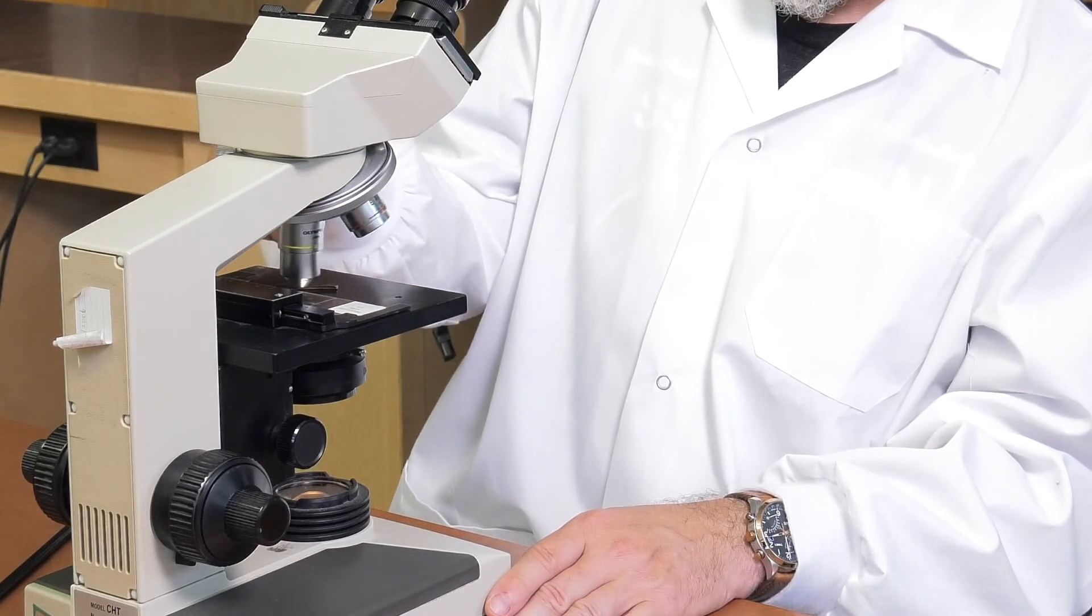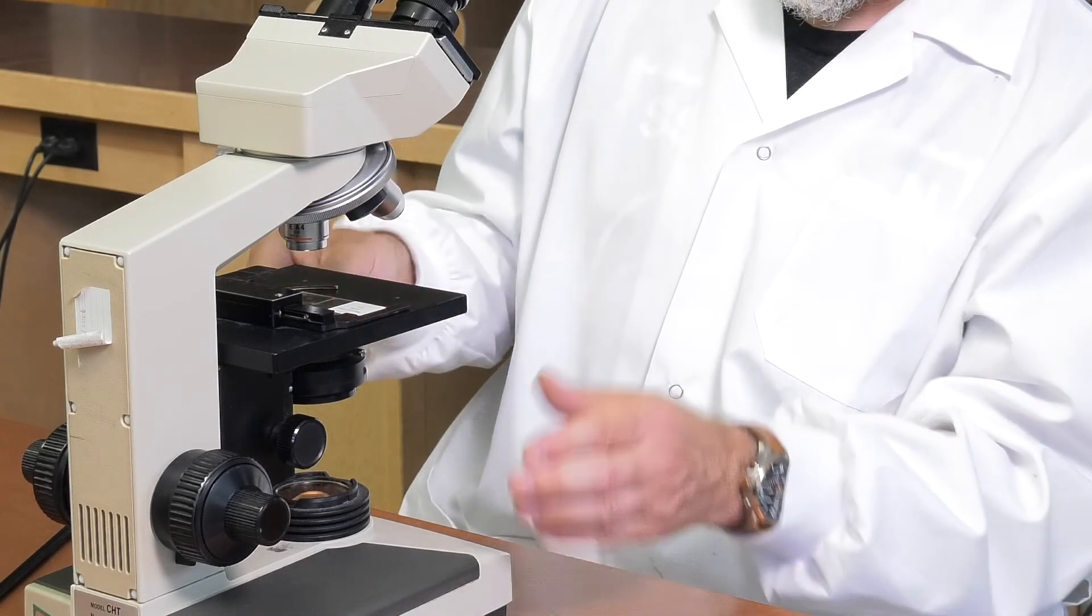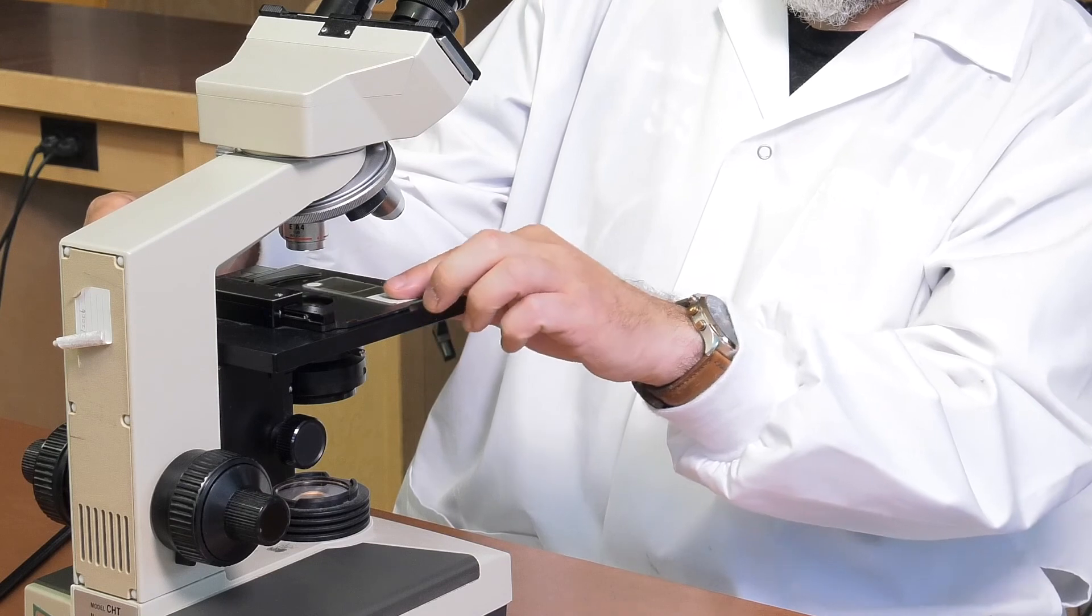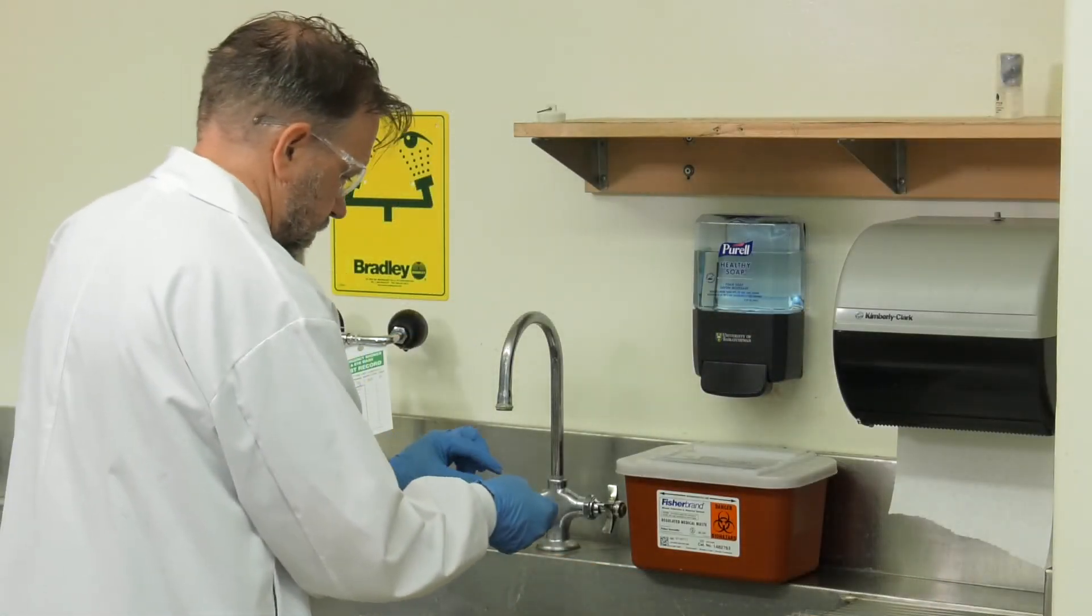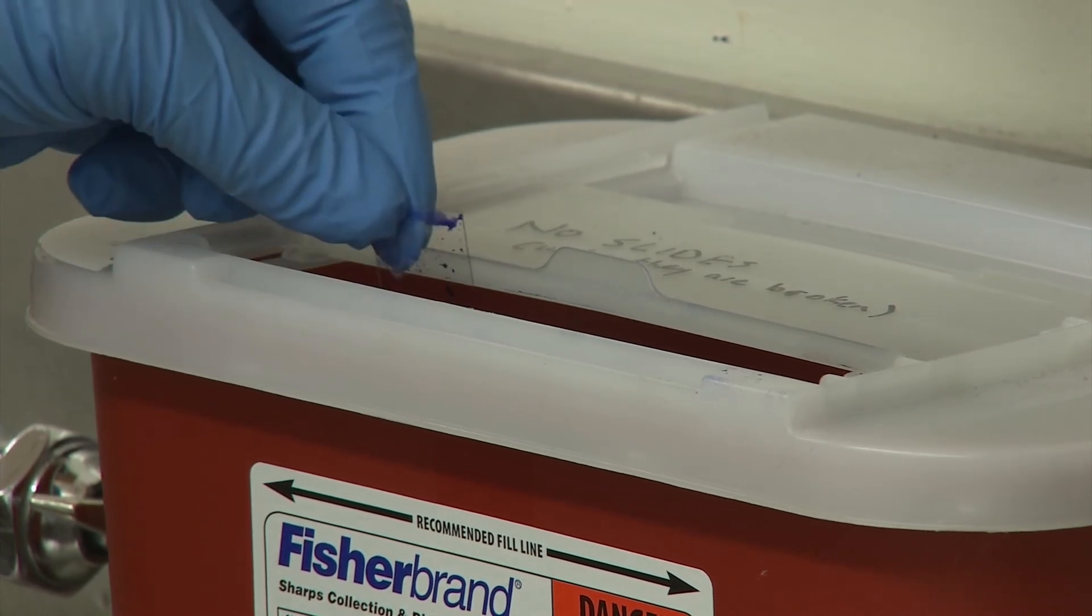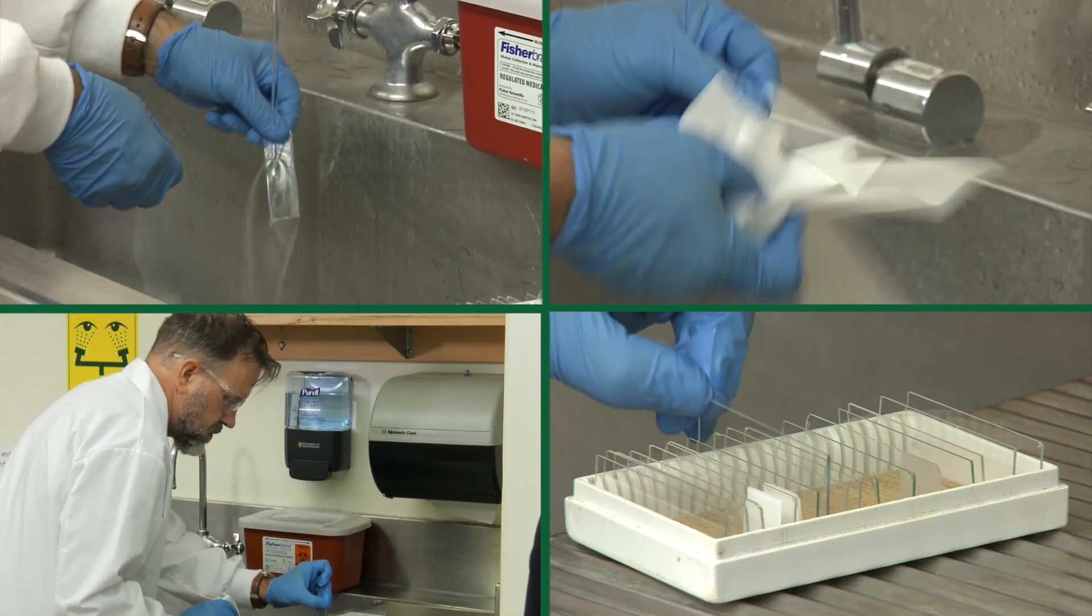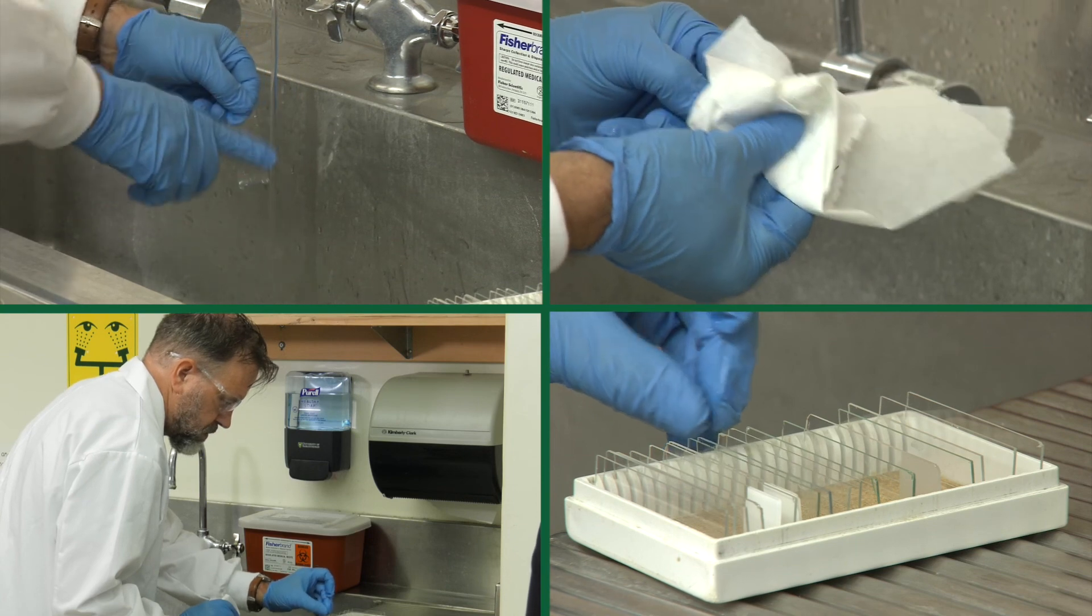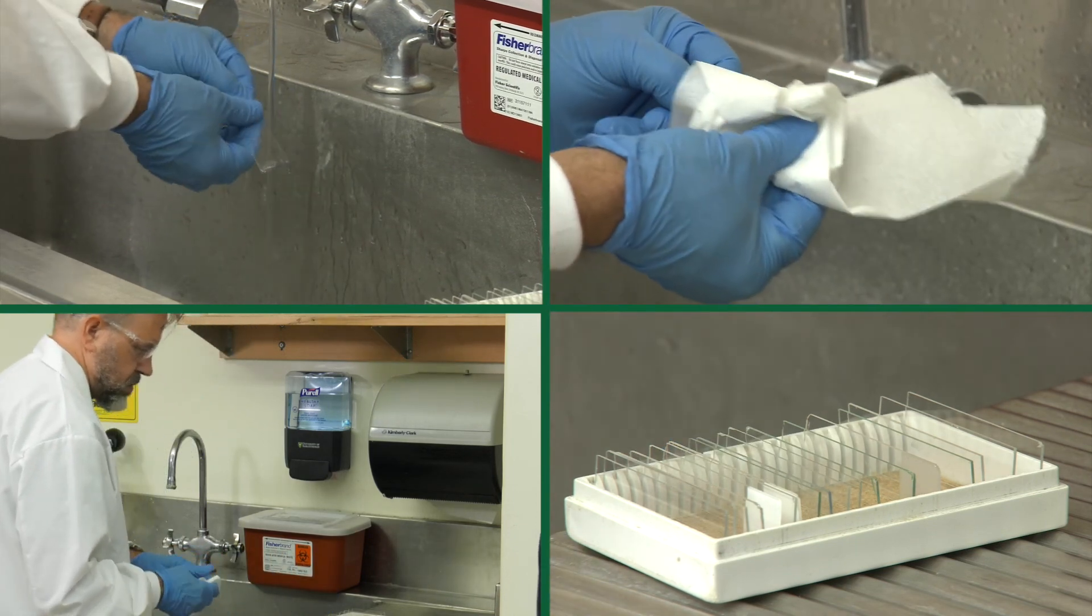Once finished with your slide, rotate to the four power objective and pick up your slide. The cover slip can be tossed into the sharps disposal bin at the sink. Don't try to clean them or they will break. The slide itself should be rinsed, washed with soap, rinsed again, and dried with a paper towel before being returned to the slide box.